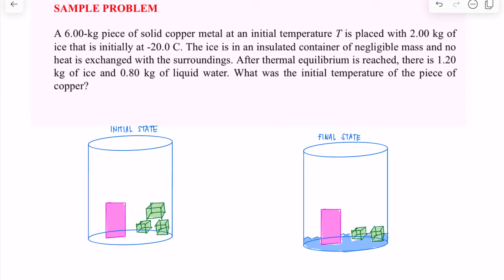This is another problem that involves phase change. This problem might look intimidating, but it's very easy once you understand the concept. The problem reads: you have a 6 kilogram piece of solid copper metal. In the illustration, the pink one represents solid copper. It is at an initial temperature T, which we don't know, and is placed with 2 kilograms of ice that is initially at negative 20.0 degrees Celsius.